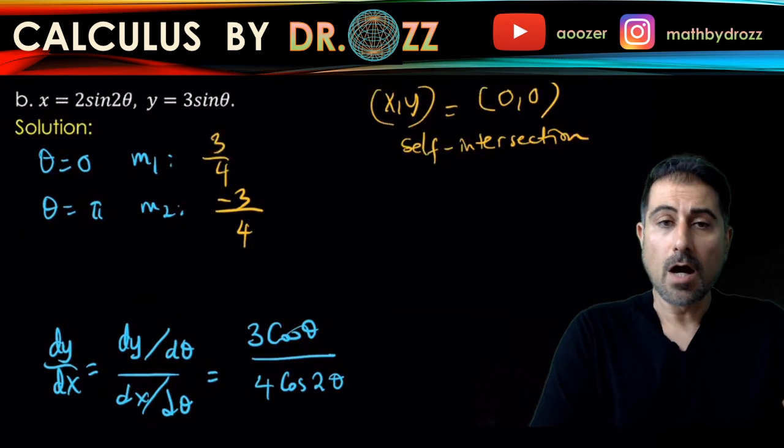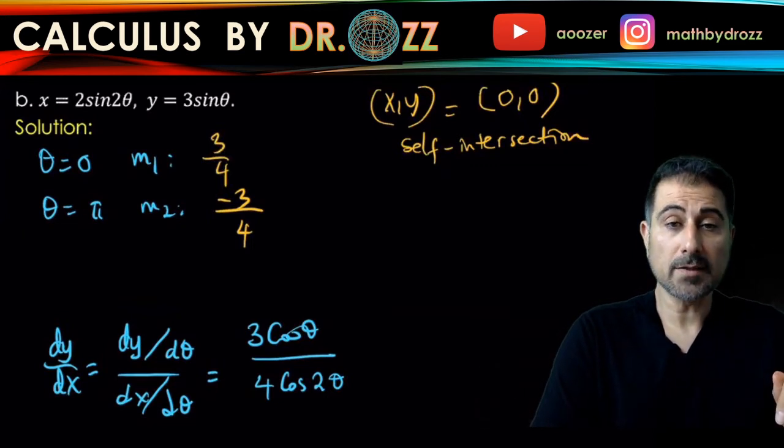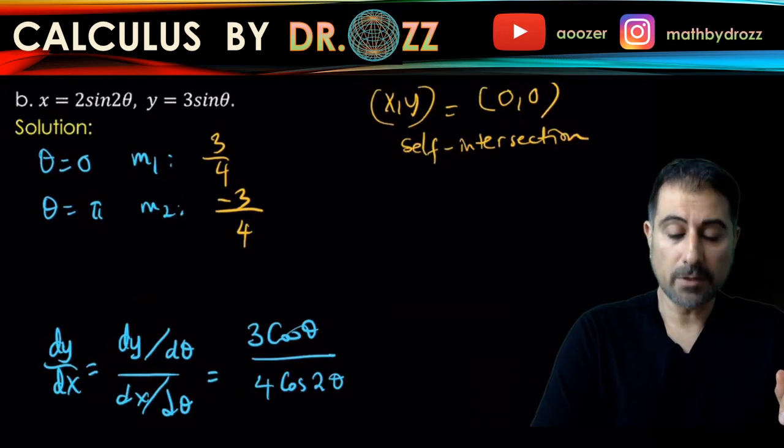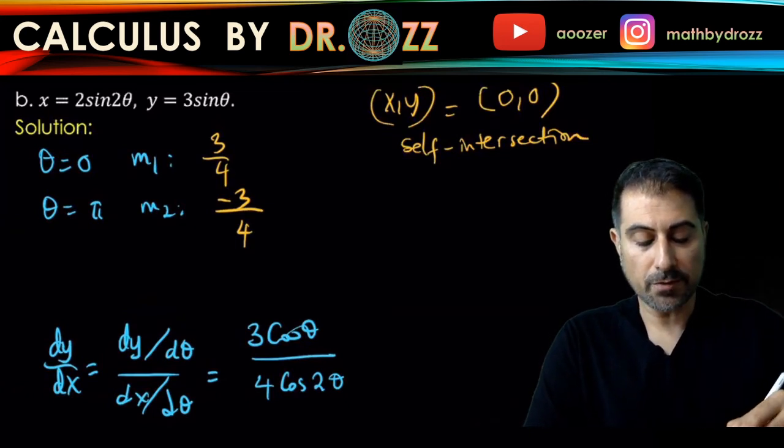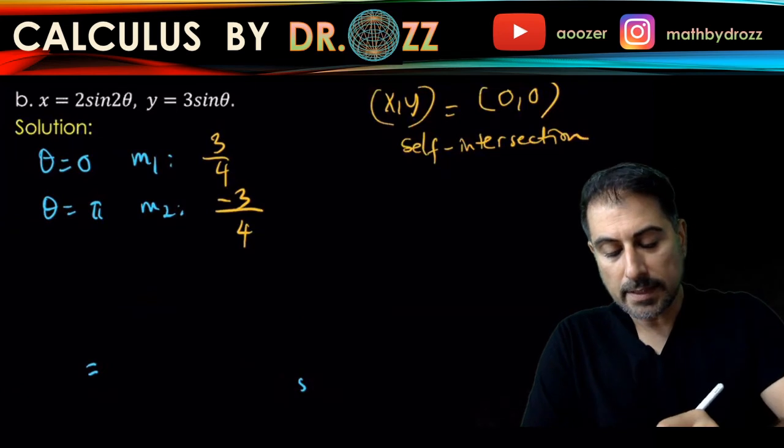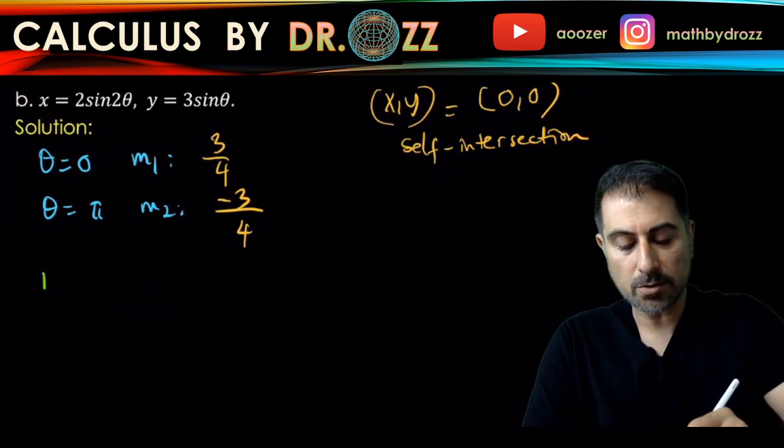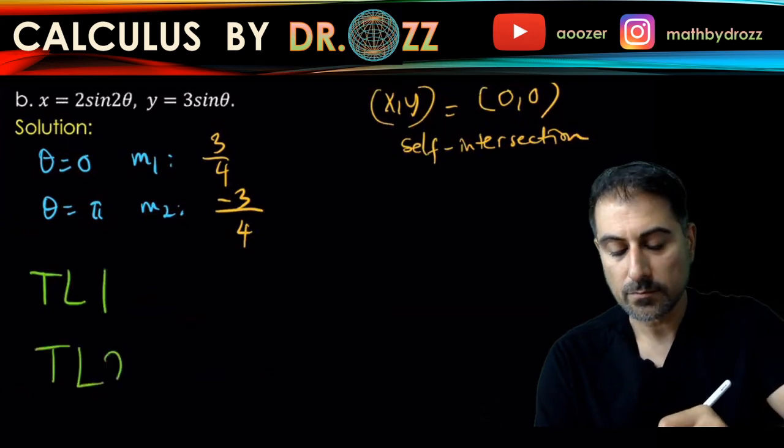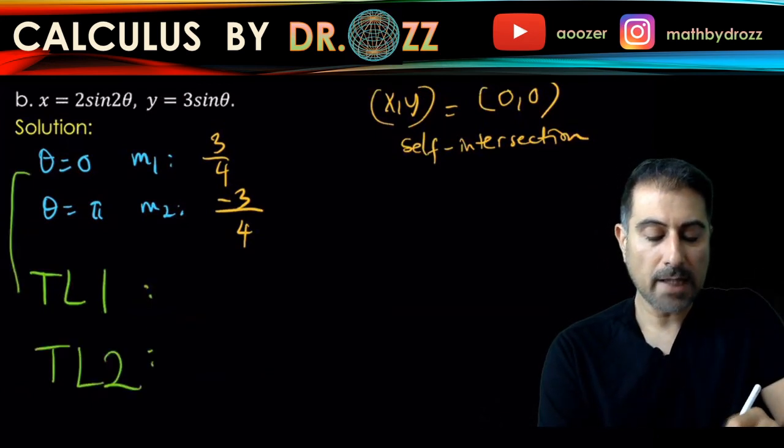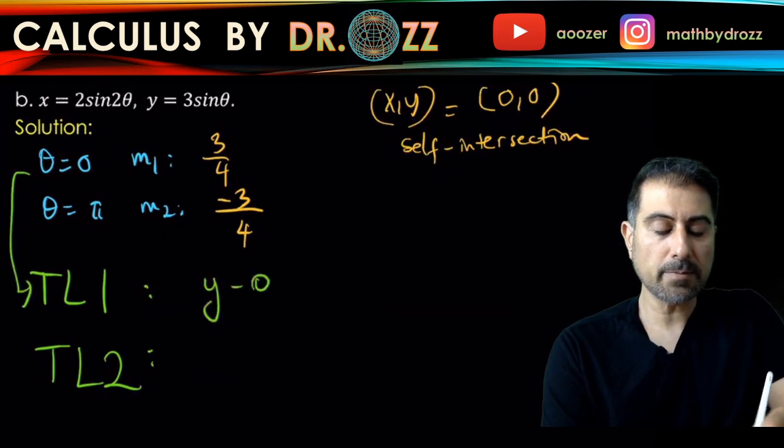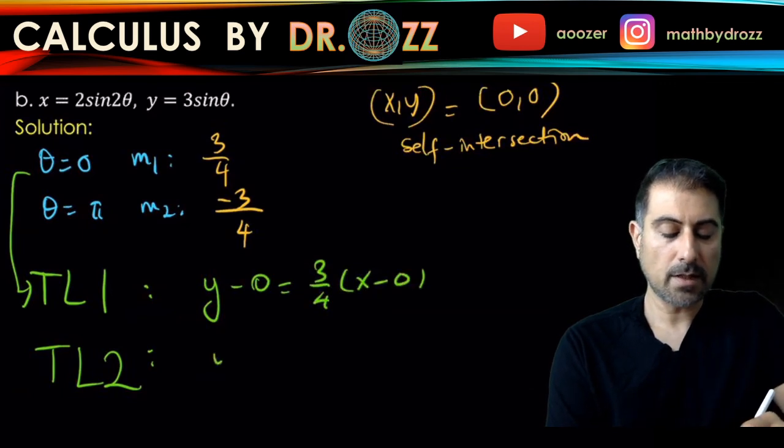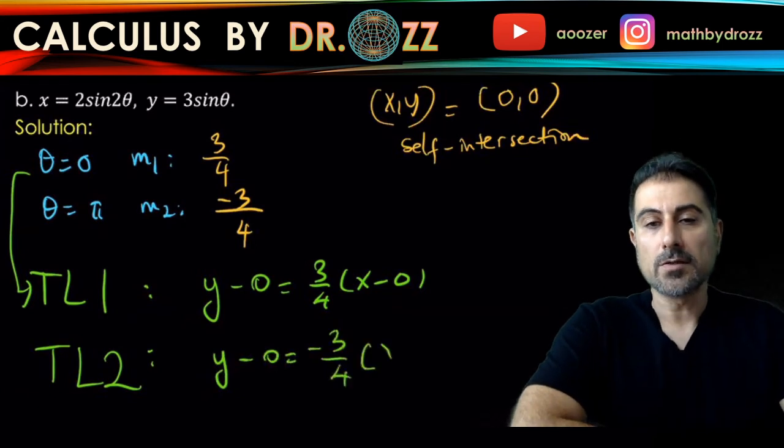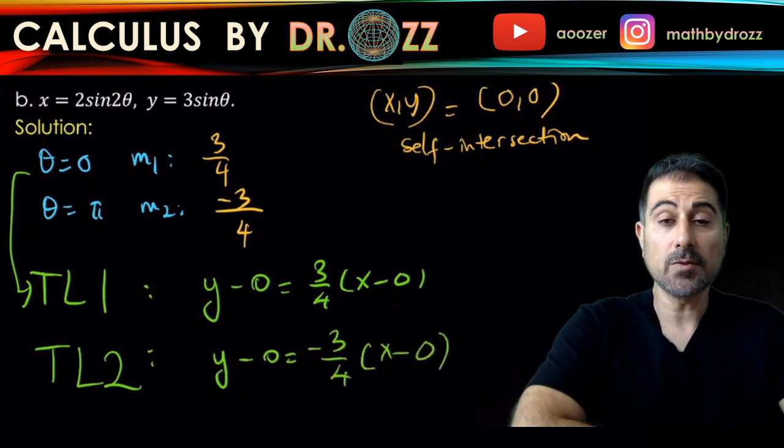I have the point - in fact, the self-intersection point zero zero - and we're going to go ahead and write down the equation of tangent lines. I have two of them: tangent line one and tangent line two. Y minus the y entry equals the slope times x minus the x entry of the point. In one case you get y equals three quarters of x, and in the second one you get y equals negative three quarters of x.